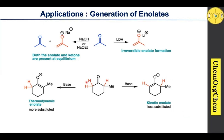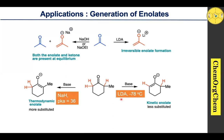Sodium hydride is a best example for the generation of thermodynamic enolate since it is a small base. LDA is the best example for generation of kinetic enolate since it is a sterically hindered base — because of steric hindrance it is difficult to take the proton from a sterically hindered position. Therefore LDA will take the proton from the less hindered site, producing the corresponding kinetic enolate. People mostly use minus 78 degrees Celsius for generation of kinetic enolate.